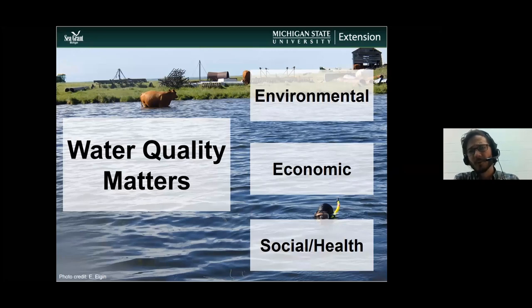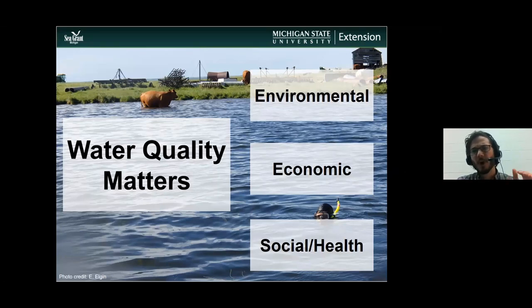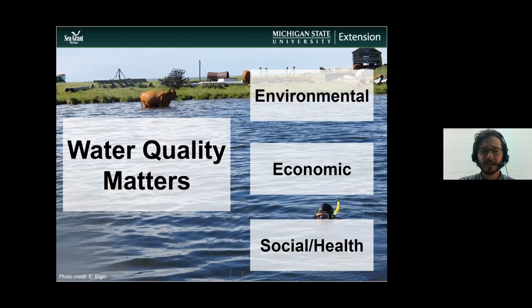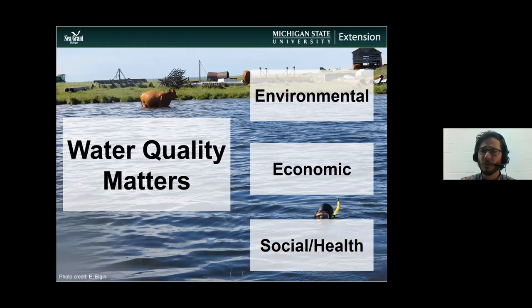When we look economically, water quality matters because as water quality declines — for example, if water clarity declines — land property values decline around that lake. The same is true if an invasive species like Eurasian milfoil invades a lake; property values decline in those situations as well. So there's an economic impact to water quality.